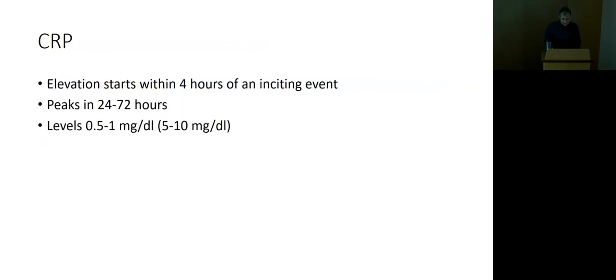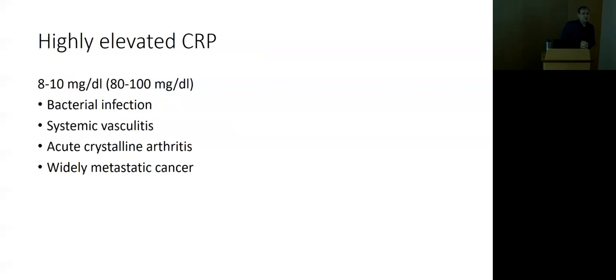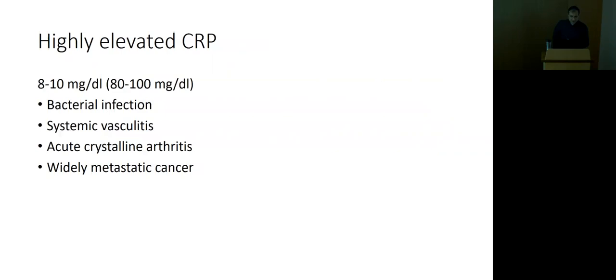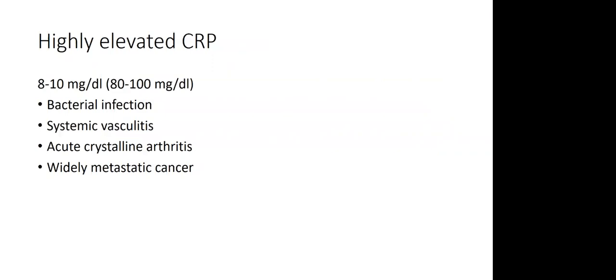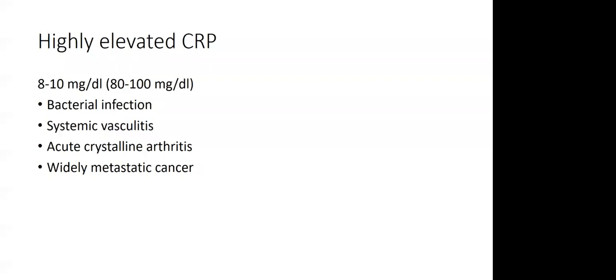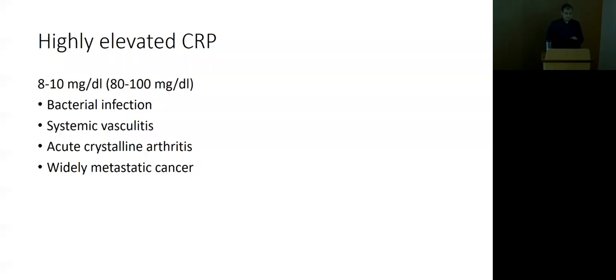When CRP is significantly elevated — say ten times the upper limit of normal — you again have to think: bacterial infection, systemic vasculitis, acute crystalline arthritis like gout flares (especially in major joints, which can be very, very inflammatory), and widely metastatic cancer. So the causes are pretty much the same as for an elevated ESR. The normal level is 0.5–1 mg/dL at the VA, though different labs use different scales — likely a tenfold difference in concentration.